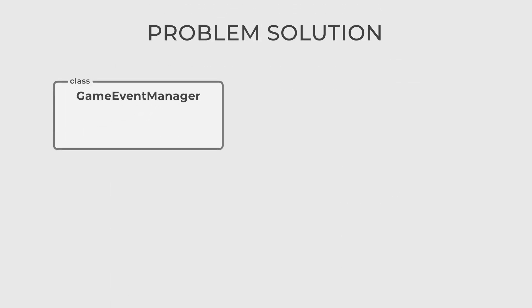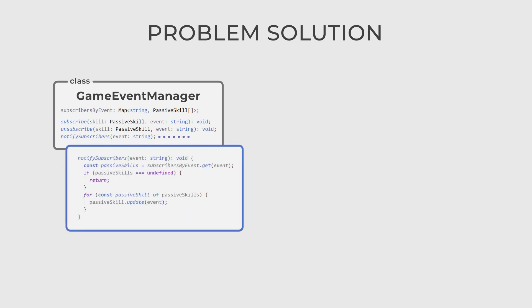First, let's create a class called GameEventManager. It contains several methods: subscribe, unsubscribe, and notifySubscribers. The notifySubscribers method accepts the type of event happening right now, and its only role is to notify the appropriate subscribers.